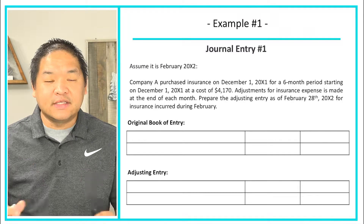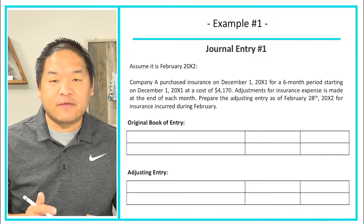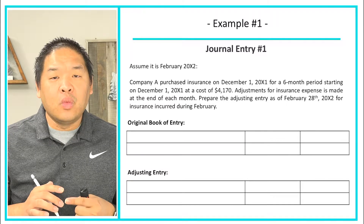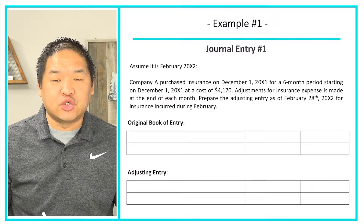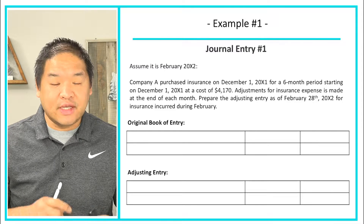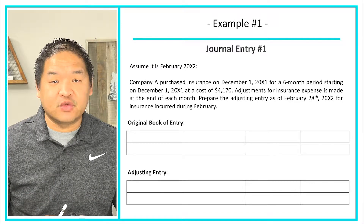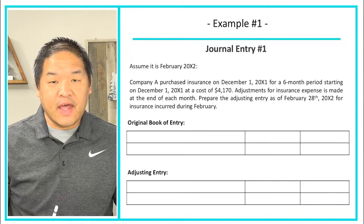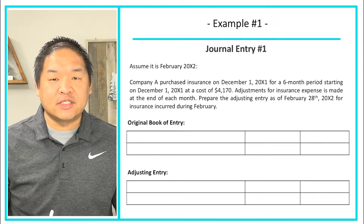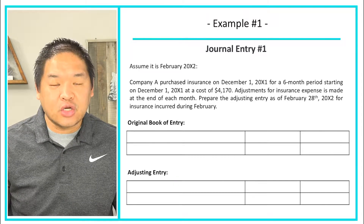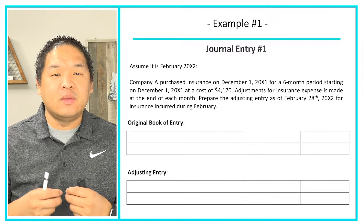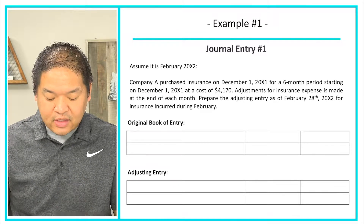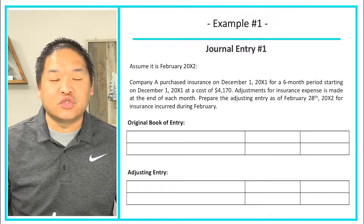We need to prepare the adjusting entry as of February 28th, 20x2 for insurance incurred during February. First, we need to figure out what the original book of entry was — that would be the entry recording the exchange of cash on December 1st, 20x1. Then we calculate how much expense was incurred for the month of February and book that expense.